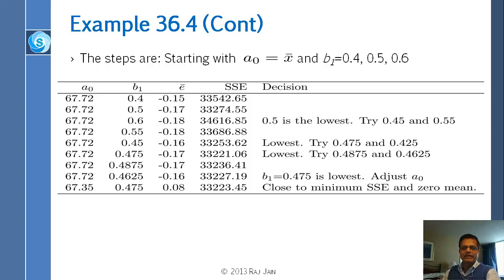We will stop here and continue this analysis next time. As you can see, for autoregressive models determining parameters is trivial, but for moving average models it is quite a pain. However, there is something good about the moving average model — that's why people use it — and we will talk about that next time. A good reference for further reading is the book by Chris Chatfield on time series analysis.